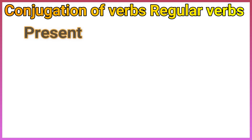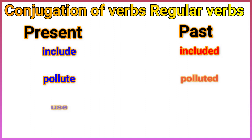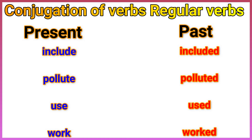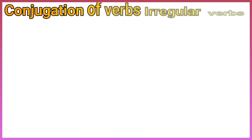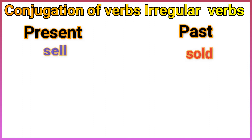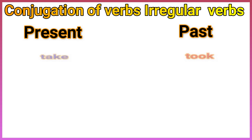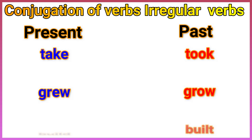Conjugation of verbs. Regular verbs — present and past: include/included, pollute/polluted, use/used, work/worked. Irregular verbs — present and past: sell/sold, say/said, buy/bought, take/took, grow/grew, build/built.